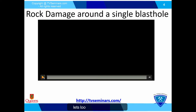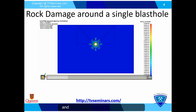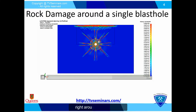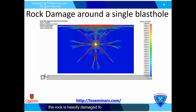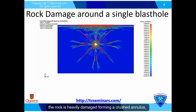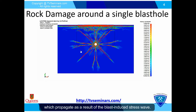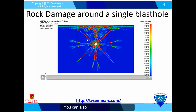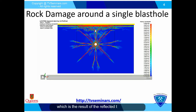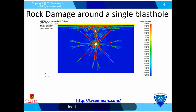Now let's look at the rock damage and fracturing around the same blast hole. As you can see, right around the blast hole the rock is heavily damaged, forming a crushed annulus followed by radial cracks which propagate as a result of the blast-induced stress wave. You can also see the parallel cracking to the free surface, which is the result of the reflected tensile wave leading to spalling of rock material.